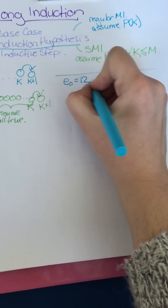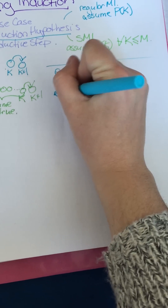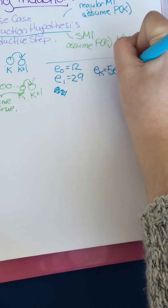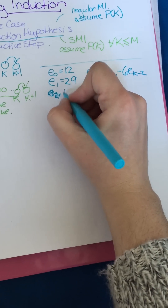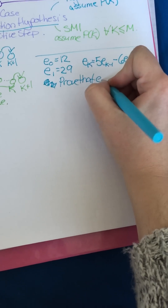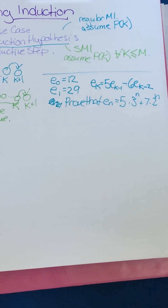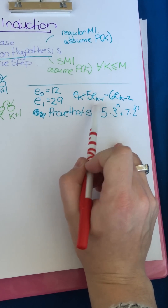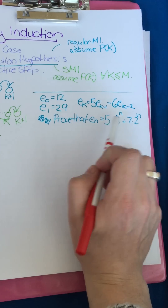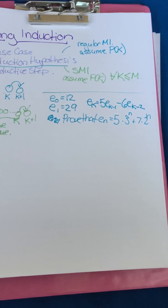Here's an example with sequences. Suppose you have a sequence defined like this: E₀=12, E₁=29, and Eₖ=5Eₖ₋₁−6Eₖ₋₂. We want to prove that Eₙ=5·3ⁿ+7·2ⁿ. We can't use regular induction here because of the K−2 term — if we try to show this holds for the next value, we have this K−2 problem.